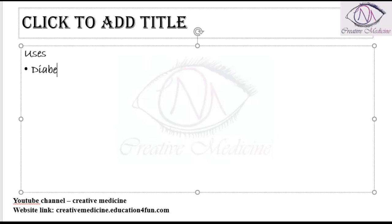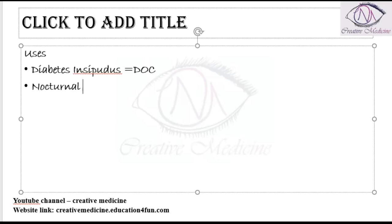Desmopressin is used in diabetes insipidus — it is the drug of choice for that condition. It can also be used in nocturnal enuresis, where it is now the drug of choice, replacing the earlier use of imipramine.